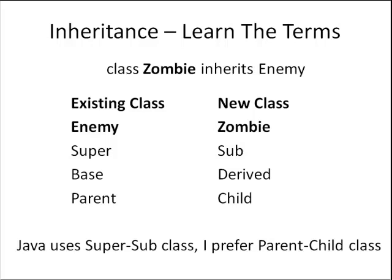Another set of terms is base and derived. Enemy would be the base class and derived would be the new class zombie. Another set of terms is parent. Enemy would be the parent class used to create the child class zombie. These three sets of terms are confusing, but depending on what book you read, you need to learn all three sets of terms.